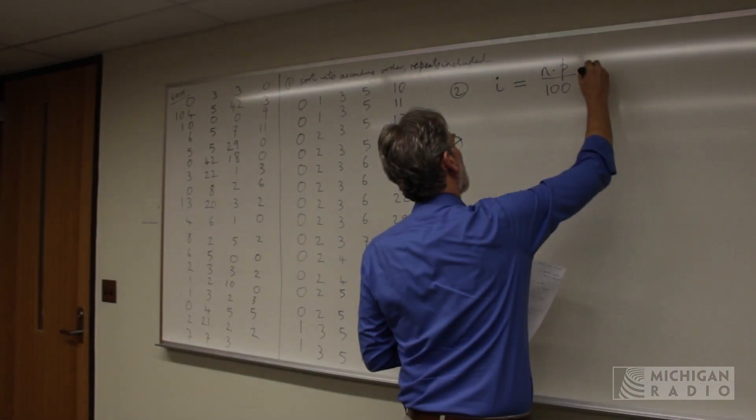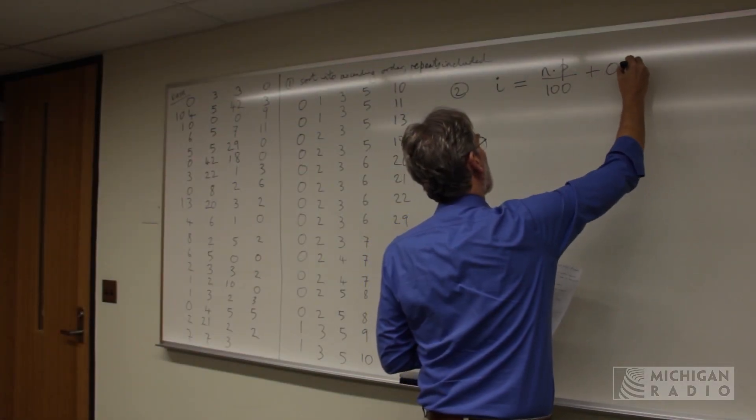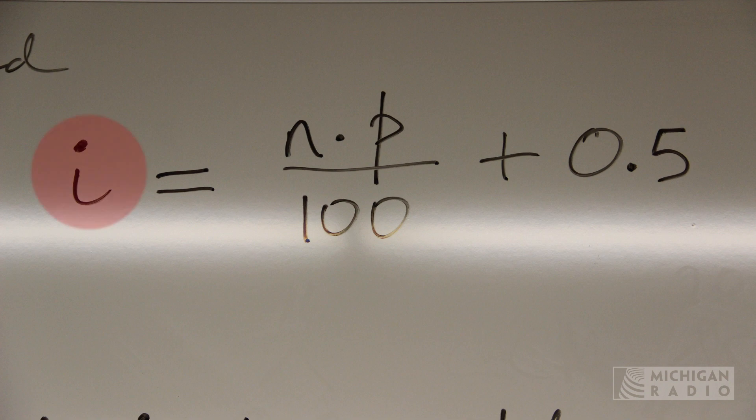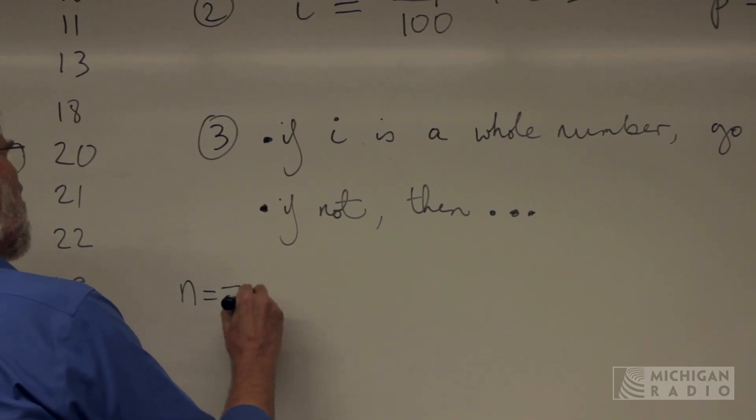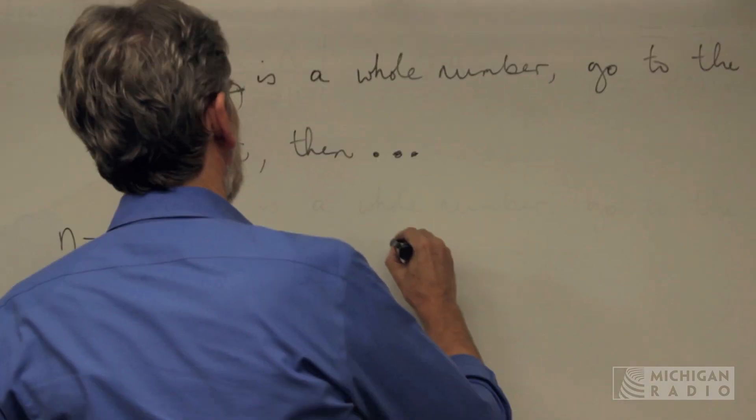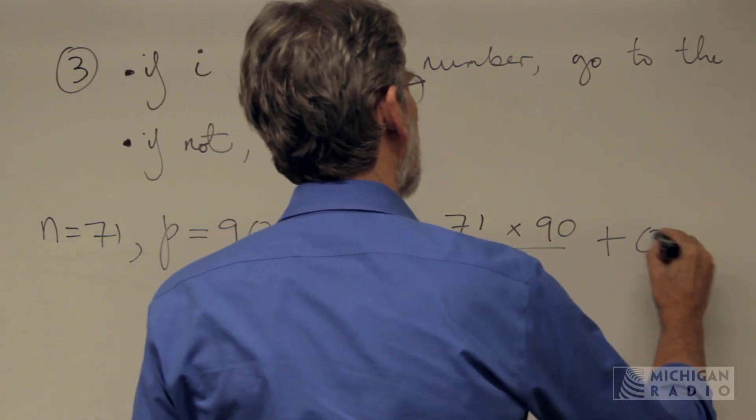Let's go to the formula. So this I is going to tell us where to look. We're going to count to position I, and I is given by this formula. N is the number of numbers that we have, which is 71 in our case. P is the desired percentile, which is 90. We plug them in here: N times P divided by 100, and then we add 0.5.